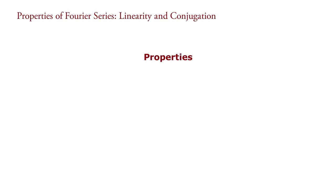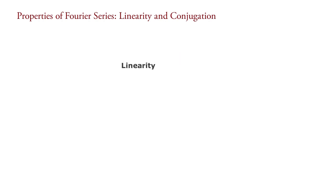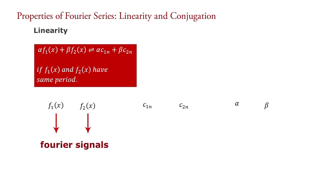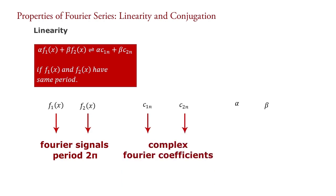Today I will describe linearity and conjugation properties. First, linearity. The linearity property is described as: alpha f1(x) plus beta f2(x) corresponds to alpha c1n plus beta c2n, if f1(x) and f2(x) have the same period. Here f1(x) and f2(x) are Fourier signals with same period 2 pi. c1n and c2n are their complex Fourier coefficients respectively, and alpha and beta are any numbers.